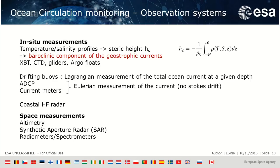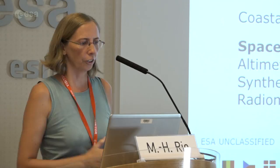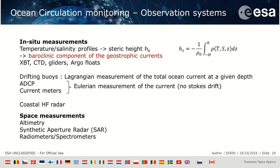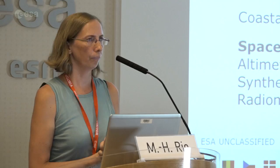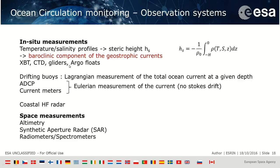I will give an overview of what exists to observe ocean circulation. The first in situ system is to measure hydrological profiles — temperature and salinity at depth. As mentioned, by integrating density over depth you get an estimate of dynamic height, from which, using the geostrophic approximation, you can get the baroclinic component of geostrophic currents. Measurement tools include XBT, CTD, gliders, and Argo floats.